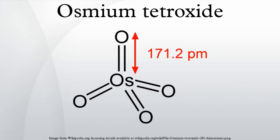Osmium tetroxide is the chemical compound with the formula OsO4. The compound is noteworthy for its many uses, despite the rarity of osmium. It also has a number of interesting properties, one being that the solid is volatile. The compound is colorless, but most samples appear yellow, most likely due to the presence of the impurity OsO2, which is yellow-brown in color.